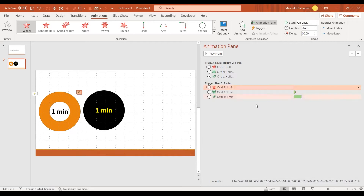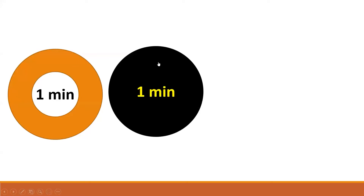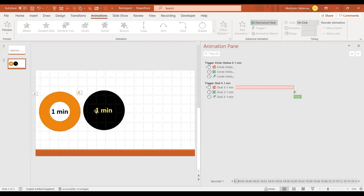My animation is ready. When I go to full screen and click on it, it's going to slowly start the countdown. My one-minute timer is on the side and you can see it ticking, and this is the five-minute one. I just change the text accordingly.